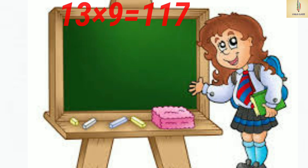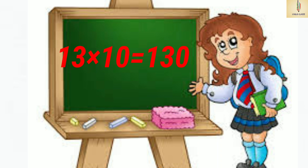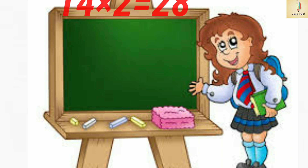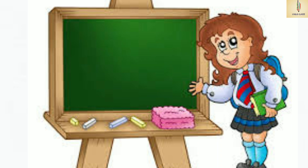13 nines are 117. 13 tens are 130. 14 ones are 14. 14 twos are 28. 14 threes are 42.